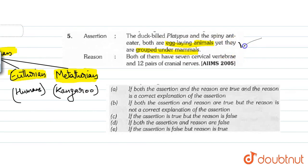Now let's see our reason. According to reason, both of them have 7 cervical vertebrae and 12 pairs of cranial nerves. This is also right. 12 pairs of cranial nerves - humans have this as a mammal. This is a mammal characteristic that may differ among animals, but it's a norm.